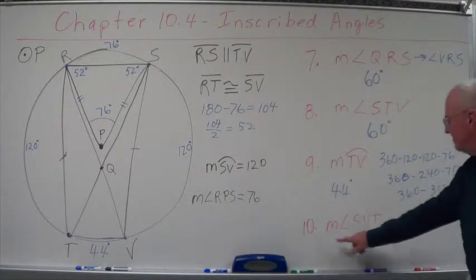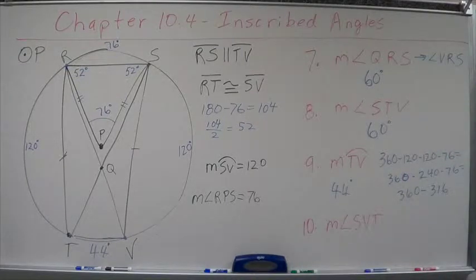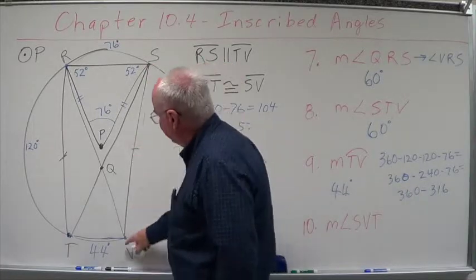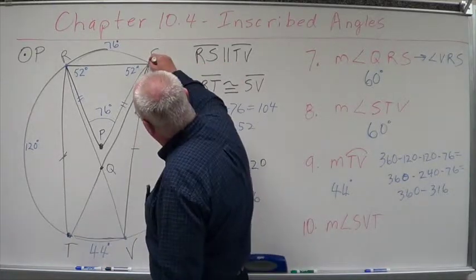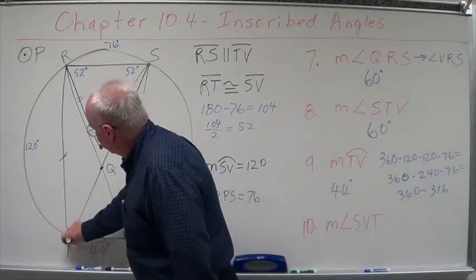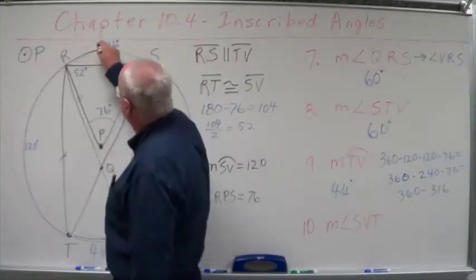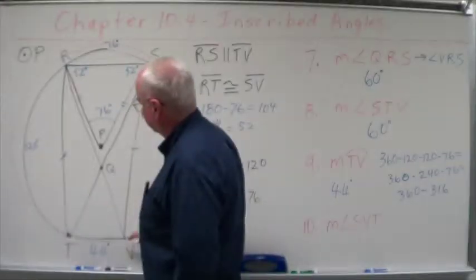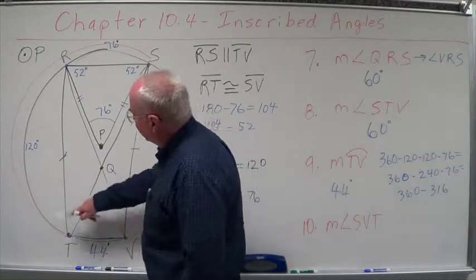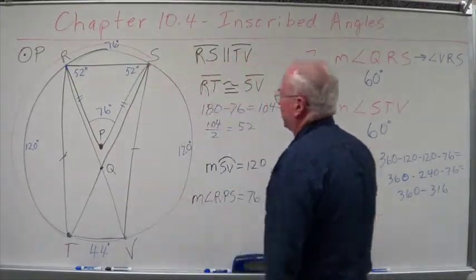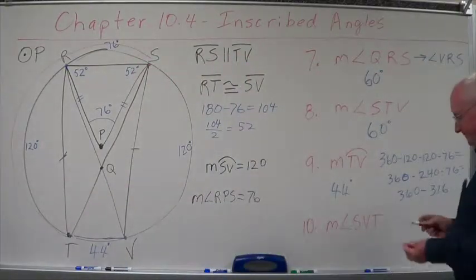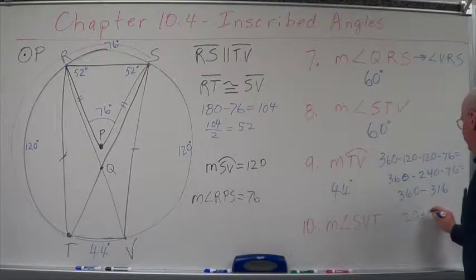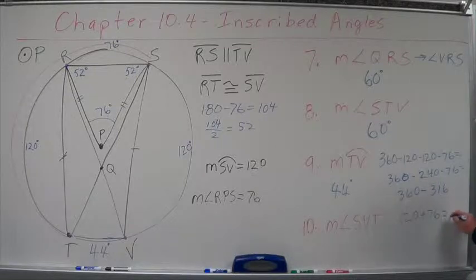Now then, the last one on this set is the measure of angle SVT. Well, SVT starts here and goes to here, and it does this whole arc here. Well, what is that arc? 120 plus 76. And we know that the arc it creates is twice the measure of the angle. So it creates arc 120 plus 76 equals 196.